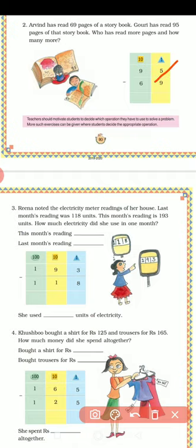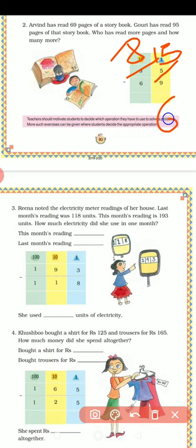So what we will do? 5 will become 15 — it is borrowing — and 9 will become 8. So 15 minus 9 is 6, and 8 minus 6 is 2. So how many more pages has Gauri read? By 26 pages. Who has read more pages and how many more? Gauri has read more pages than Arvind by 26.